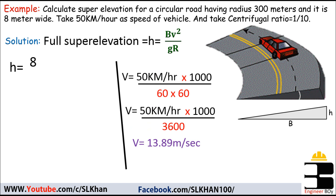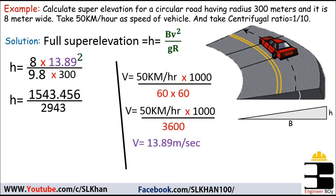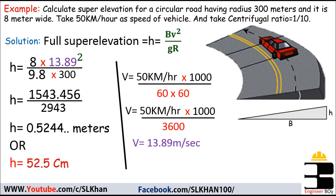Now we can substitute into the formula: h = 8 × (13.89)² divided by g (9.81 m/s²) × r (300 meters). Doing the arithmetic gives us a value of full super elevation equal to 0.524 meters, or approximately 52.5 centimeters.